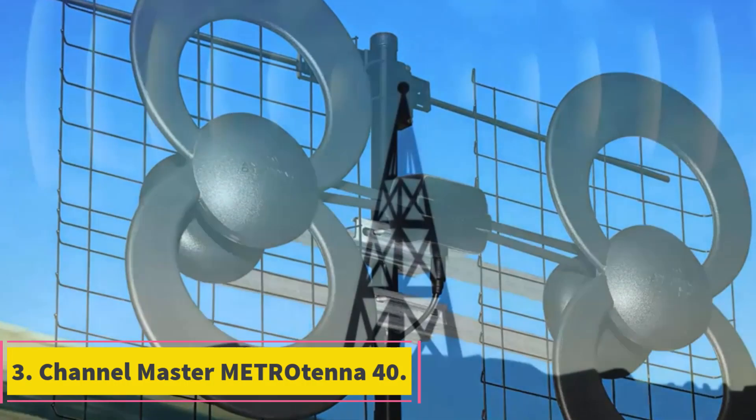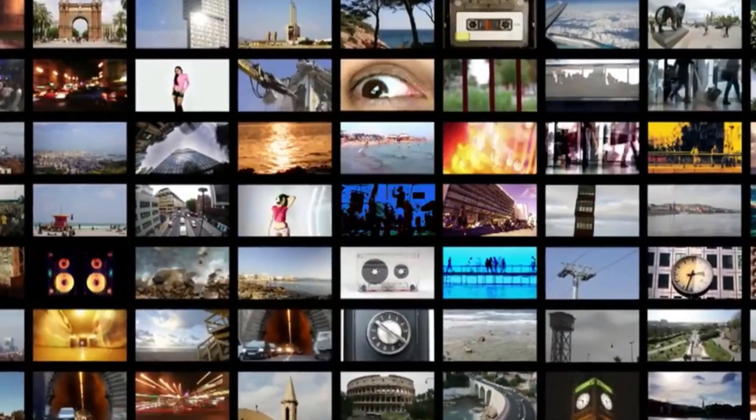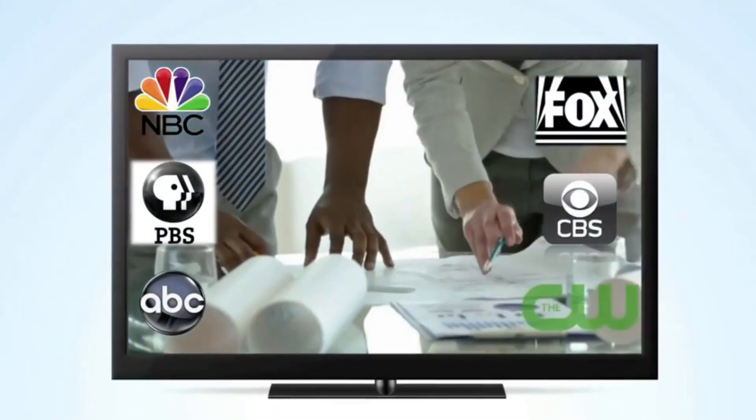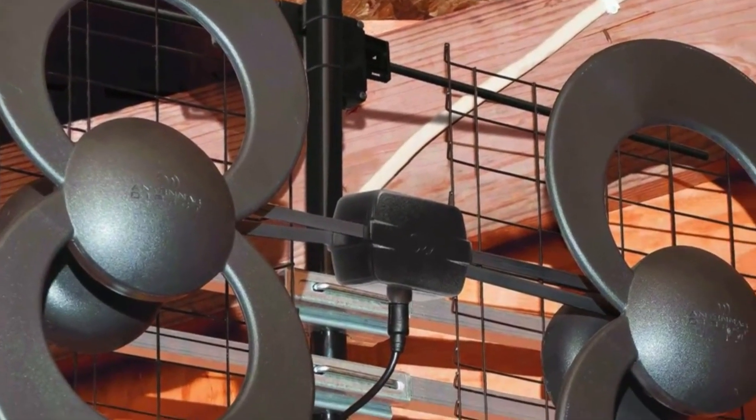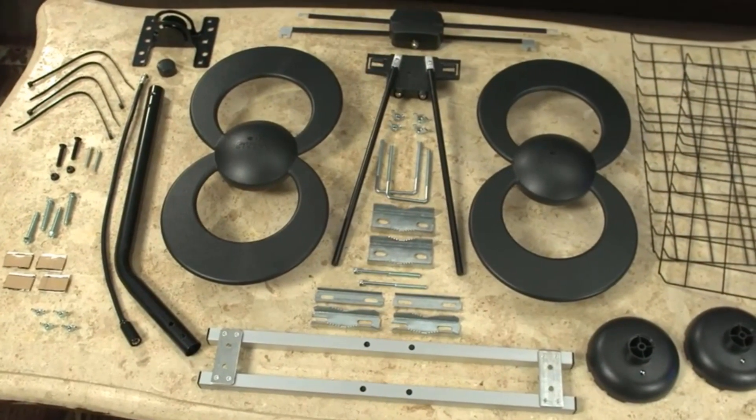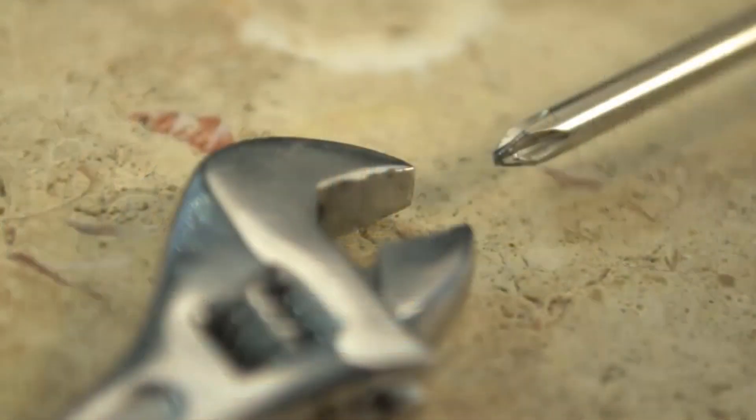Channel Master Metrotenna 40. The 4228 HD 8-bay HD outdoor antenna from Channel Master picks up standard UHF and VHF signals as well as FM radio. While it weighs 10 pounds, I was struck by how small and thin this antenna is, with a 2-foot turning radius.